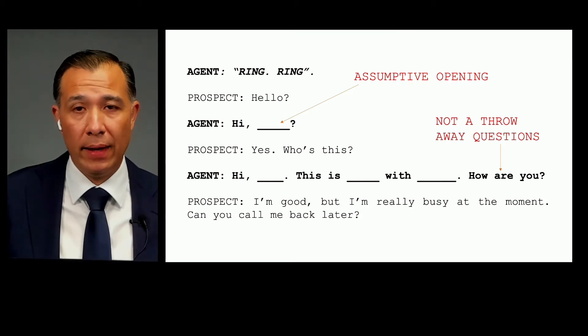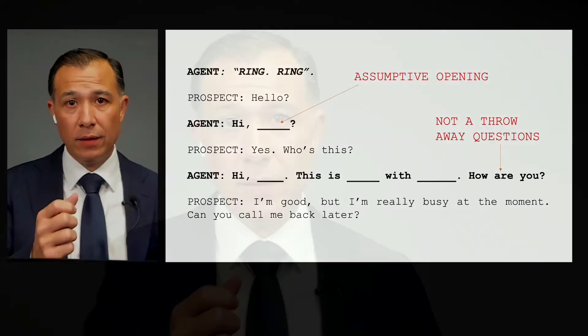In this script, they respond: 'I'm good, but I'm really busy at the moment — can you call me back later?' You called, did the assumptive opening, identified yourself as being with XYZ Realty. They can do the math — if an unknown person calls and identifies themselves as a real estate professional, they know it's going to be some sort of sales call. Let's be honest, let's own it — it's fine.